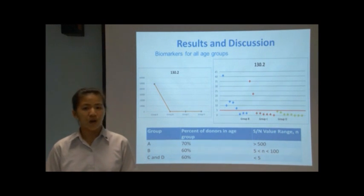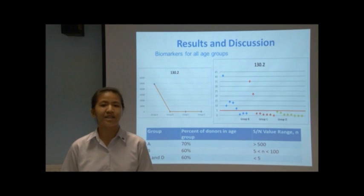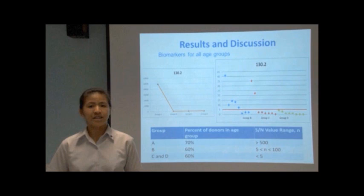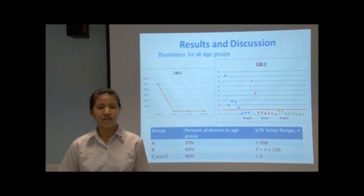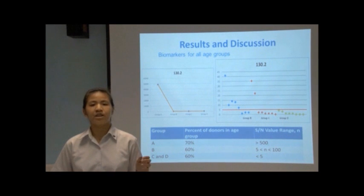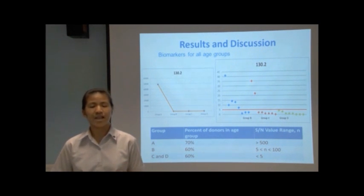Moving on to the biomarker for all age groups, we have the compound with the mass-to-charge ratio of 130.2. The graph on the left shows that the SN value was highest in group A, with 70% of donors having SN values of more than 500. The graph on the right shows the SN values of individual donors from groups B, C, and D. It clearly shows that 60% of donors from group B have SN values between 5 and 100, while 60% of donors from groups C and D have SN values of less than 5. This suggests that if the subject's SN value is more than 500, they are 70% likely to be in group A; if between 5 and 100, they are 60% likely to be in group B; and if less than 5, they are 60% likely to be in group C or D.